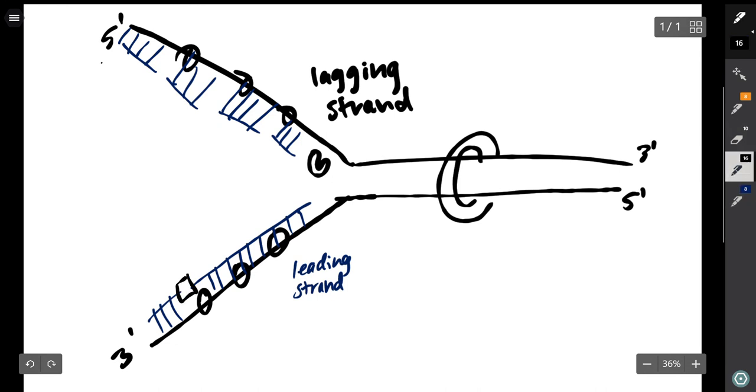Ligase will then come in and seal the nicks between the DNA that was added by polymerase 3 and polymerase 1. Once the nicks have been fixed, you are left with strands of DNA that are completely synthesized.